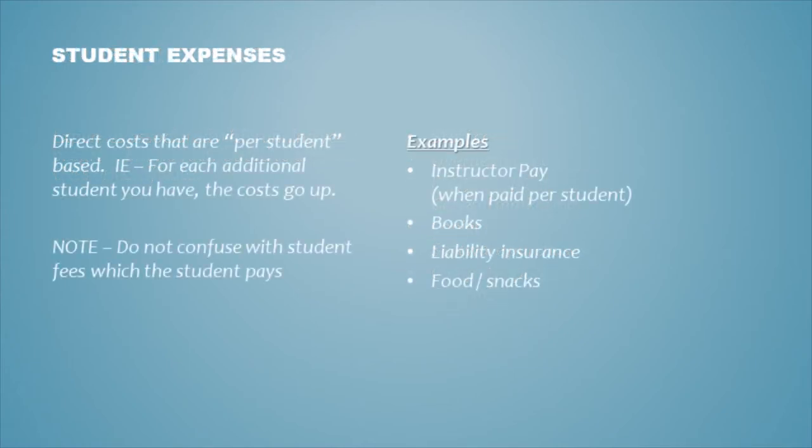The last type of expense is student expenses. These are direct costs that are per student — for example, instructor pay when paid per student, books, liability insurance, and possibly food and snacks. For each additional student you have, the cost goes up. Do not confuse these with student fees, which the student pays.